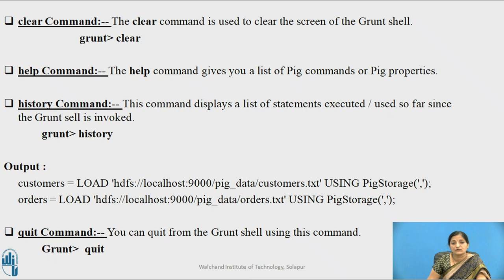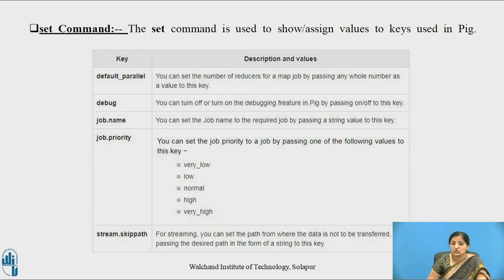The clear command clears the screen of the Grunt shell. The help command gives a list of Pig commands or Pig properties. The history command displays a list of statements executed since the Grunt shell was invoked. The quit command exits the Grunt shell. The set command is used to show or assign values to keys used in Pig. For example, you can set the number of reducers for a map job by passing a whole number to the key default_parallel, or turn on/off debugging by passing on/off to the debug key, or set a job name by passing a string to the job_name key.